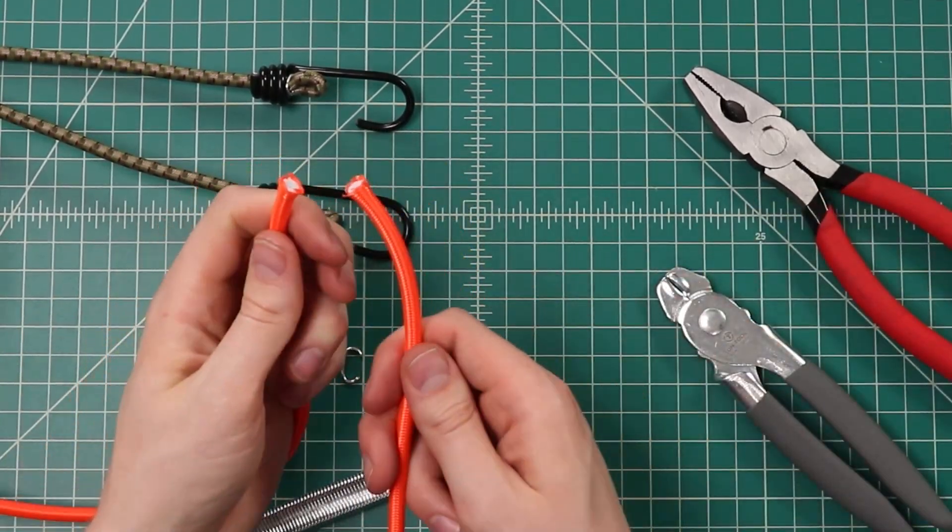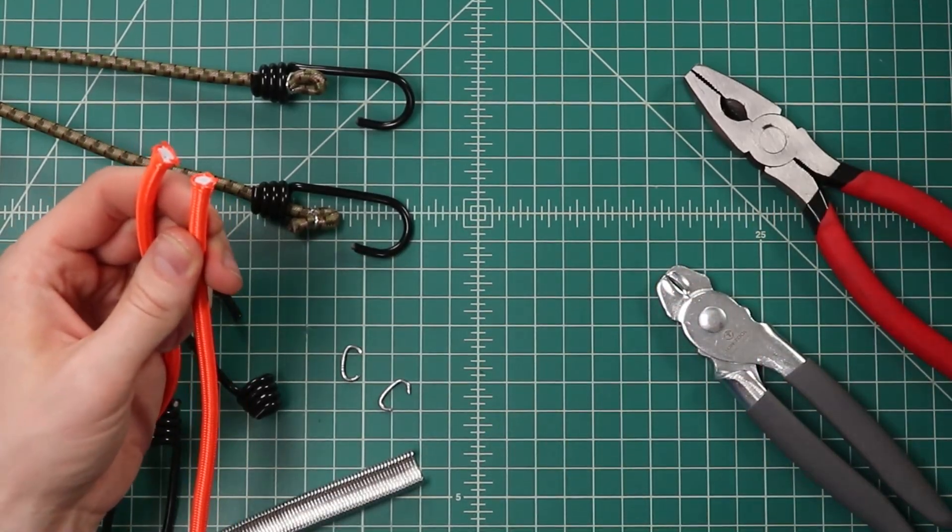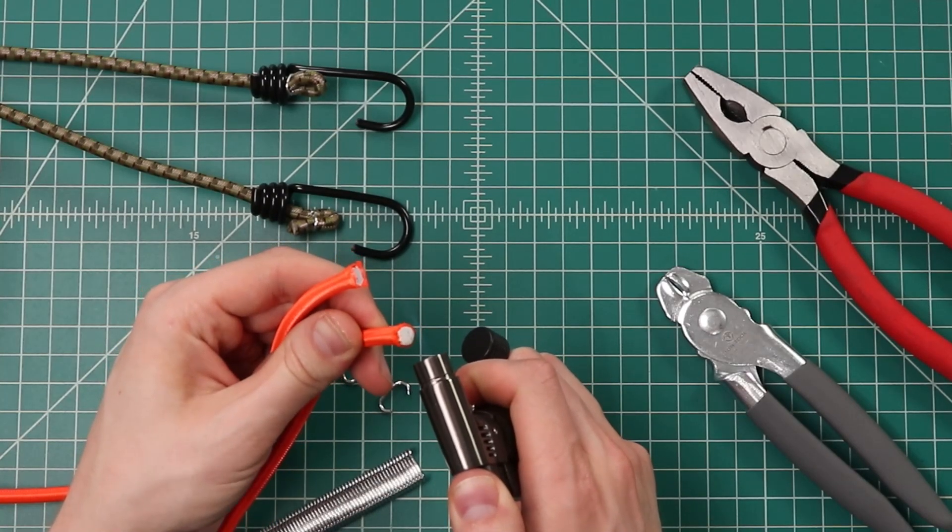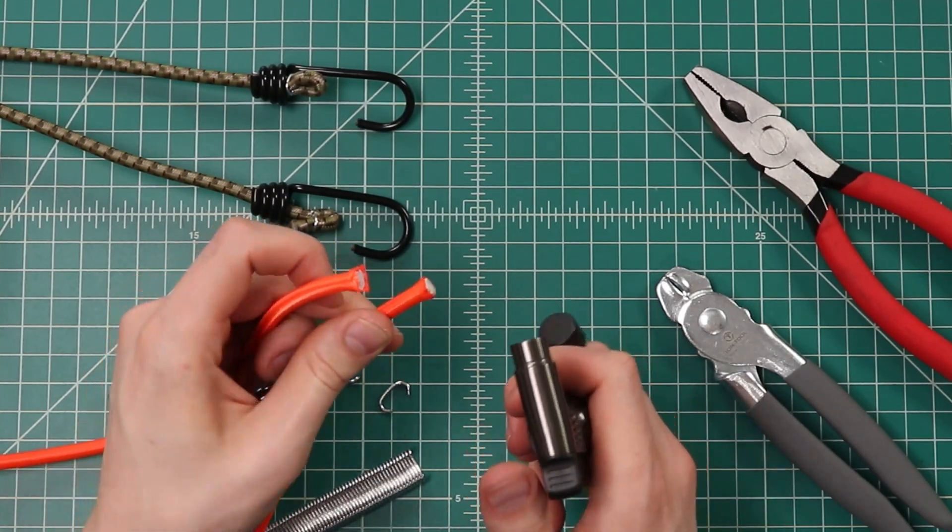Cut that at your length, and then to keep it from fraying, we just want to take a lighter, the bigger the better on these ones, and melt that outer sheath just to keep it from fraying.